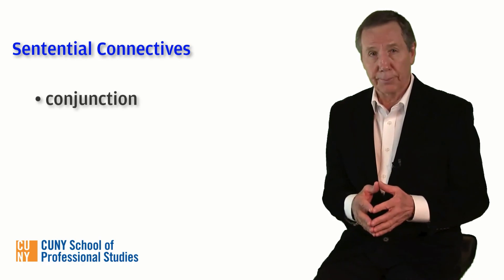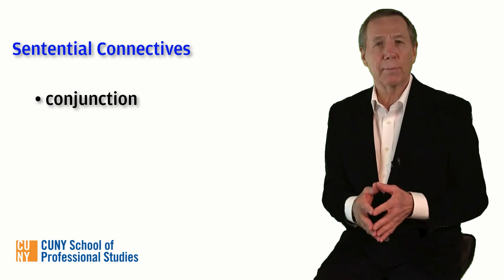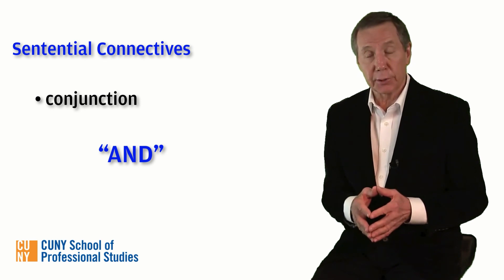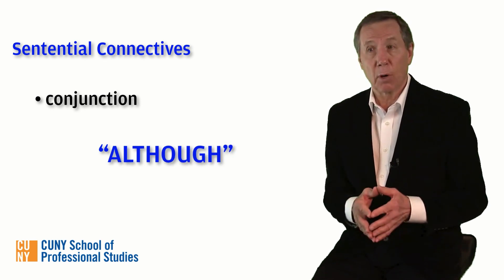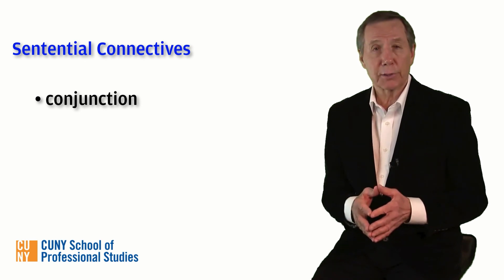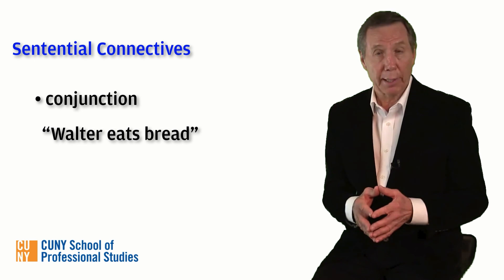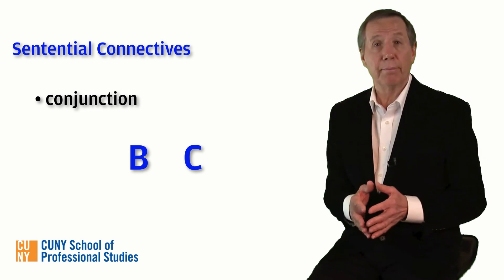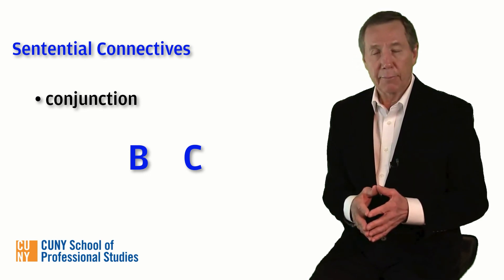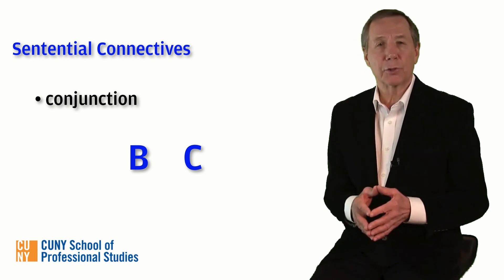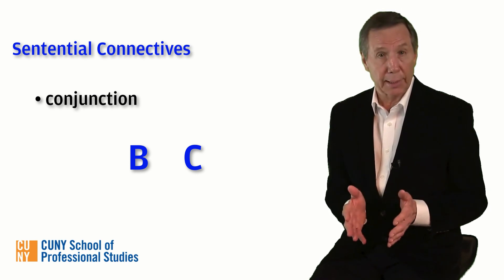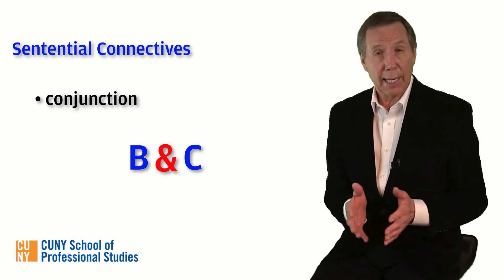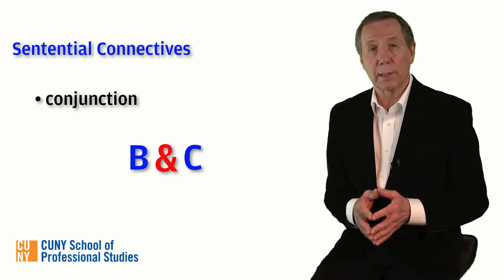Let's now look at conjunction. When we conjoin two atomic sentences, we bring them together with the word 'and,' or one of the many English words that have the same force — such as 'but,' 'yet,' 'moreover,' 'although,' and many others. They all just mean 'and.' Suppose we wanted to conjoin 'Walter eats bread' with 'Charles reads books.' We've already symbolized these two atomic sentences with B and C respectively. If we want to conjoin them, we simply insert the symbol for conjunction — the ampersand — between them, getting B & C.